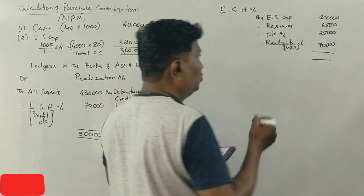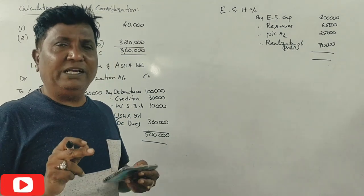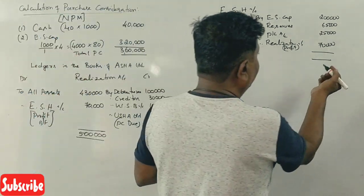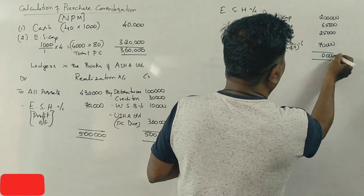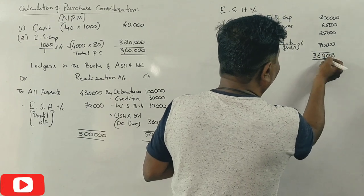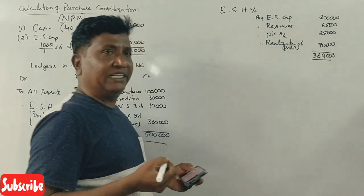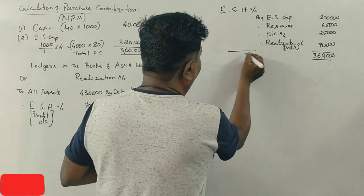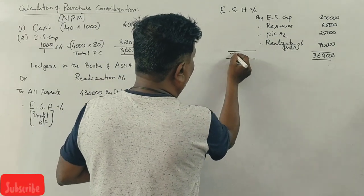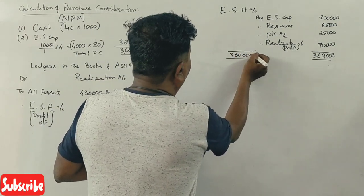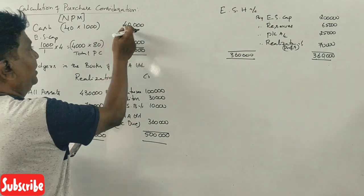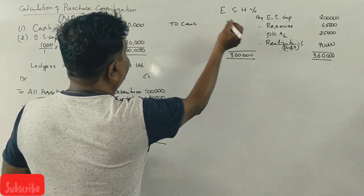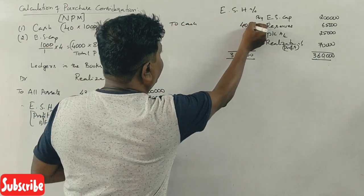This is the final settlement for the Asha company shareholders. The total amount to pay to equity shareholders is Rs.3,60,000. The purchasing company — Usha — is paying this through cash of Rs.40,000 and equity share capital worth Rs.3,20,000, thereby settling the equity shareholders account.